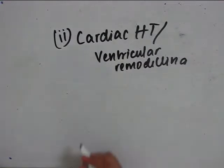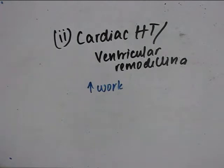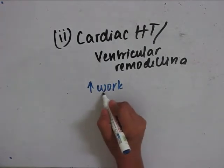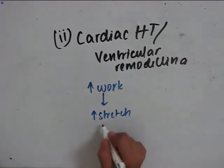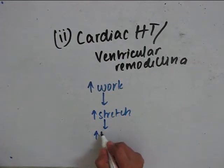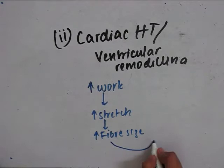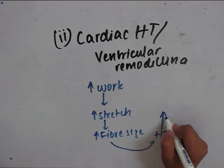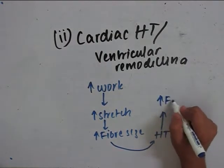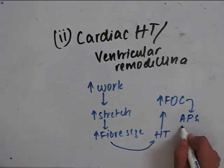The second point is cardiac hypertrophy or ventricular remodeling. As mentioned earlier, increase in work of the heart is one of the leading factors of cardiac failure. When there is increased work, there is increased stretch of individual fibers, which leads to increase in fiber size of the individual muscle fibers in the heart, known as hypertrophy — that is increase in the size of the cells of the heart. Due to this hypertrophy, there is increased force of contraction, which will maintain the arterial pressure and organ perfusion.